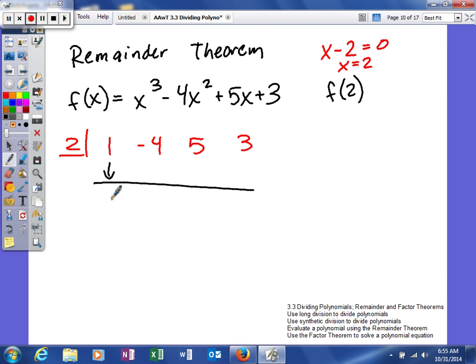So I'll bring this down and multiply. 2, negative 2, negative 4, 1, 2, and then my last number is 5. So as you can see, my remainder is 5.